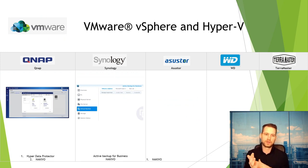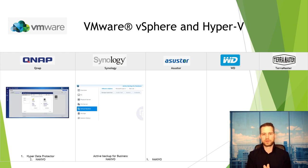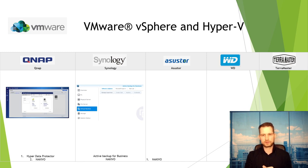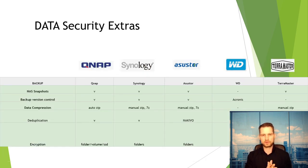For backing up virtual machines, you can use a third-party tool called Veeam — it's paid but very advanced. QNAP, Synology, and ASUSTOR support it. For free options, QNAP has Hyper Data Protector, which backs up virtual machines natively. Synology offers Active Backup for Business for the same purpose. Other brands unfortunately do not support virtual machine backup.